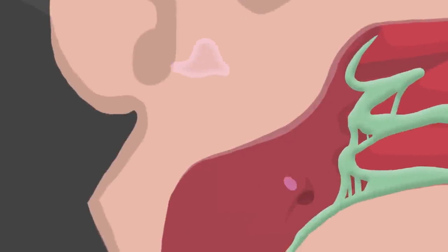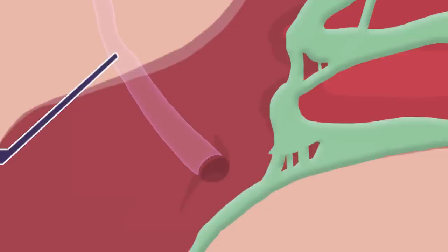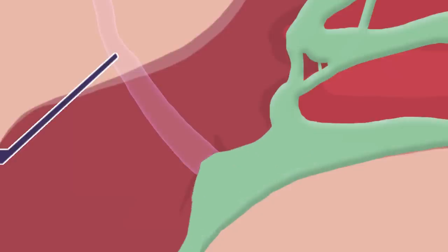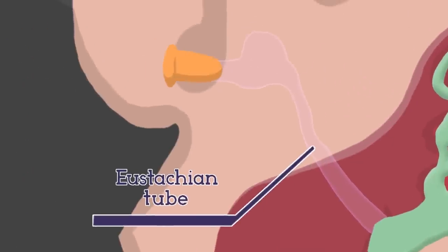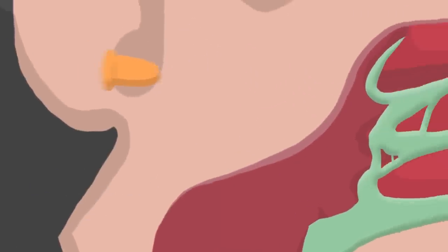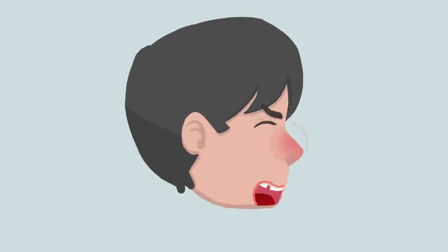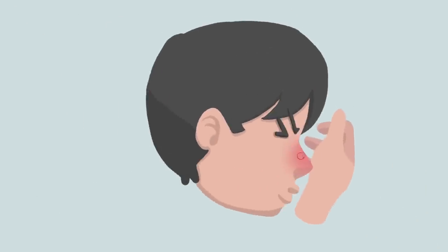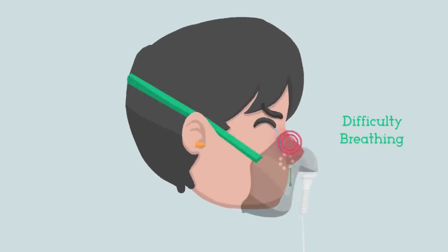Second, the Eustachian tube, which drains drainage from the middle ear. With it blocked too by excessive mucus production from allergic rhinitis, you will have a stuffed ears sensation. Finally, the nerves in the nasal cavity will start getting irritated and lead to sneezing. All of this will lead to difficulty in breathing for persons suffering from allergic rhinitis.